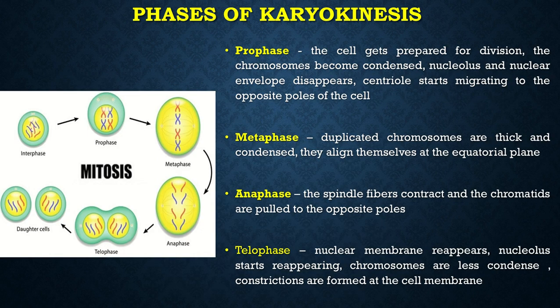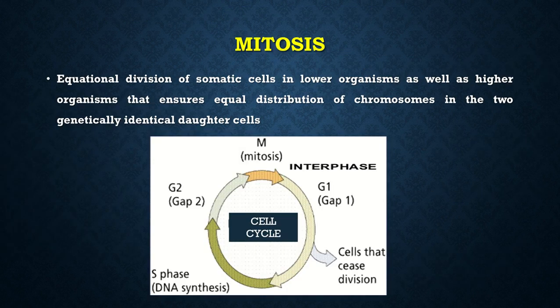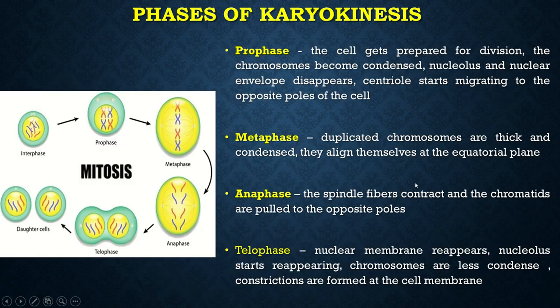The cell cycle has certain phases: G1, S, G2, and M. We are here concerned about this M phase. We'll talk about the phases of karyokinesis. Karyokinesis has prophase, metaphase, anaphase, and telophase.